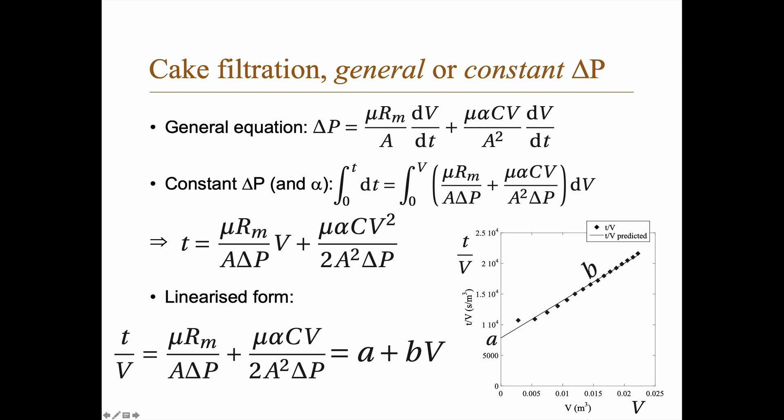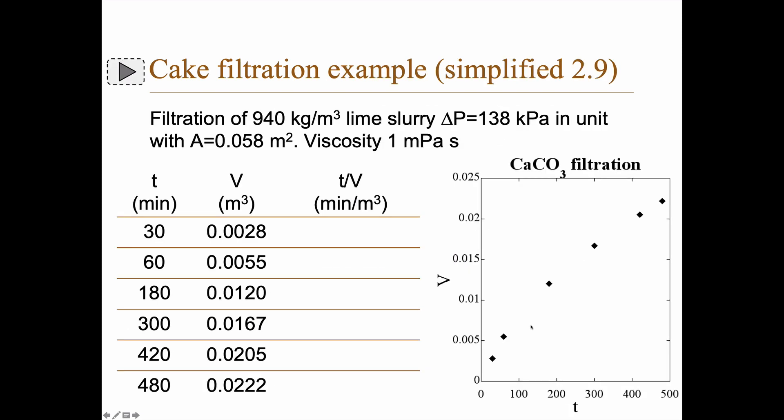You see that t divided by V equals a plus bV, and we should be able to plot something linear here. In my compendium you find some more data, and here is just a few data points.